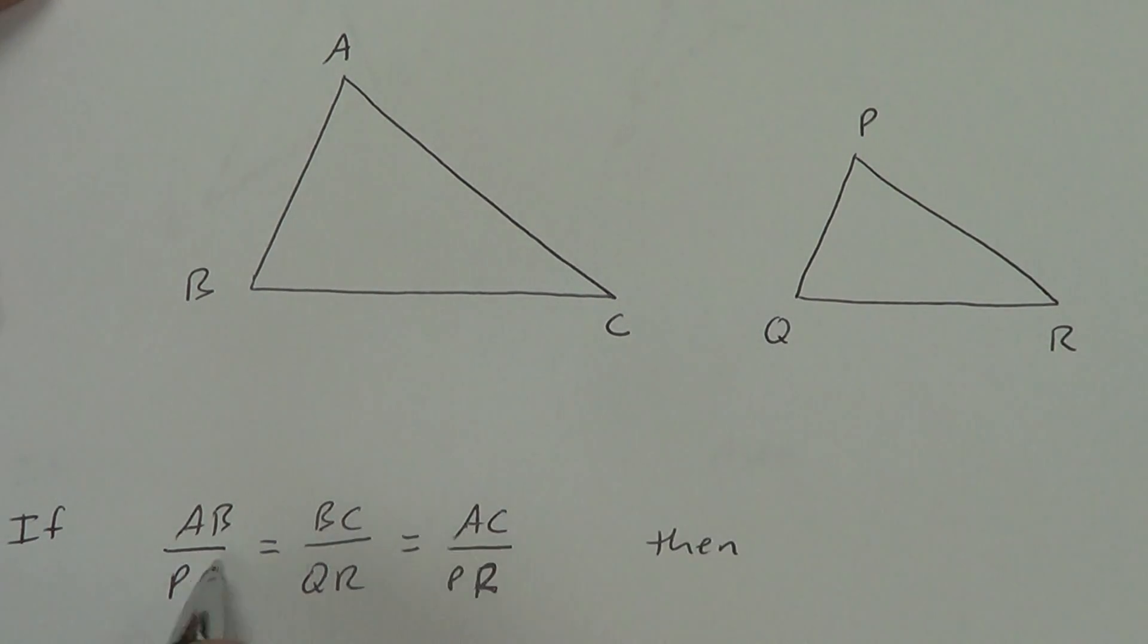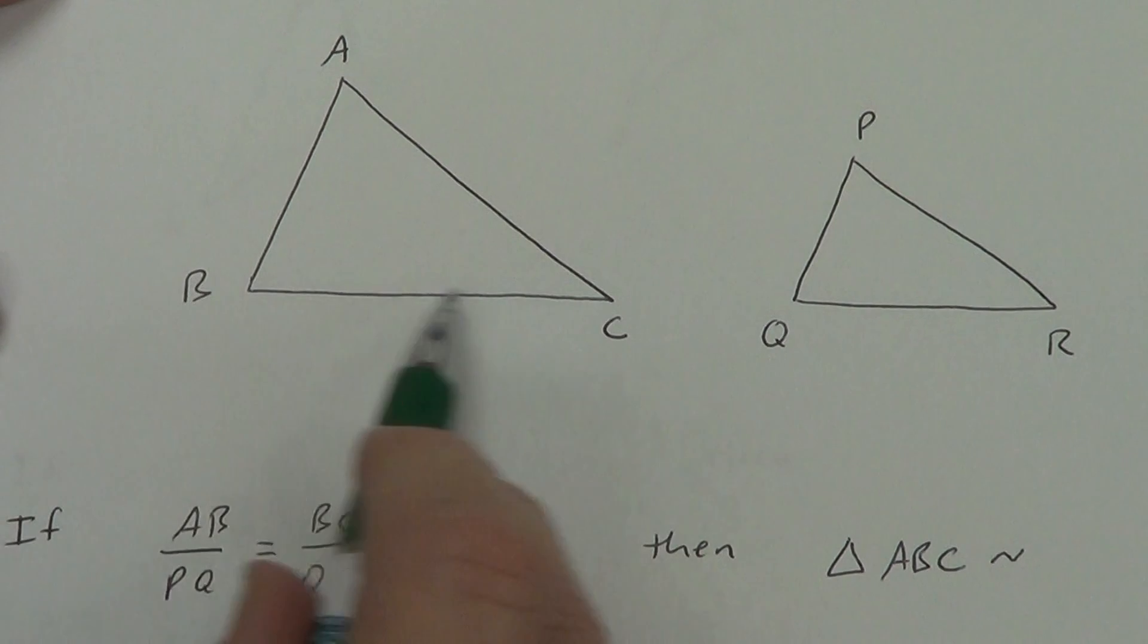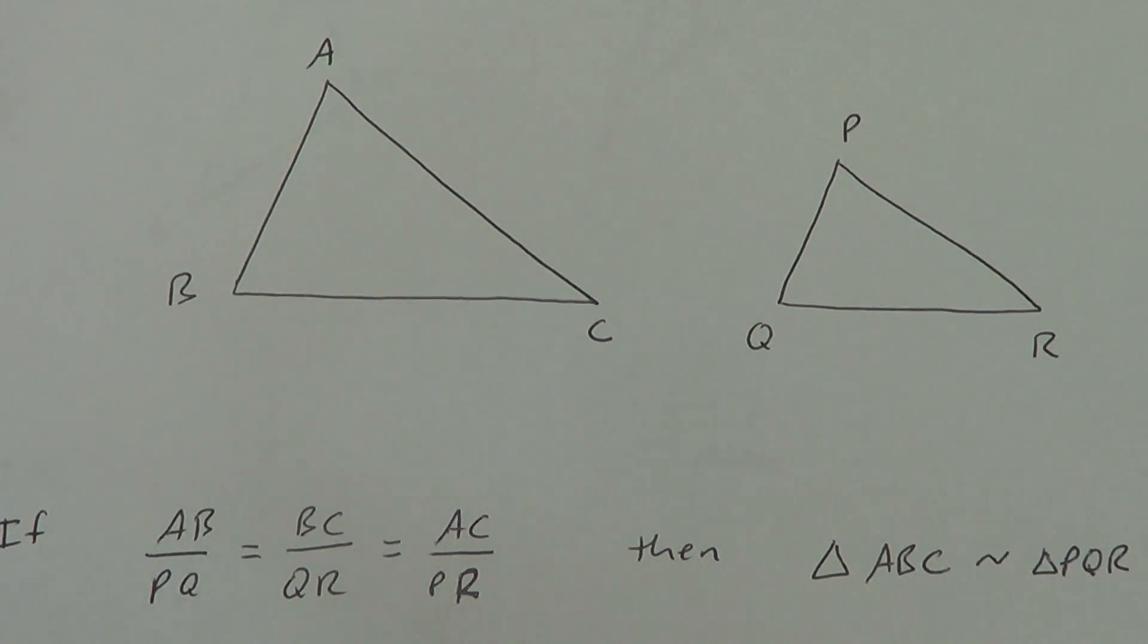I've got two triangles here. To apply the side-side-side similarity theorem, if AB over PQ equals BC over QR, which equals, remember, you need all three sets of sides. So I did AB, I did BC, now I need to do AC over PR. If all three sets of sides are proportional, if these reduce to the same scale factor, the same ratio, then triangle ABC is similar to triangle PQR. That's what the side-side-side similarity theorem is talking about.